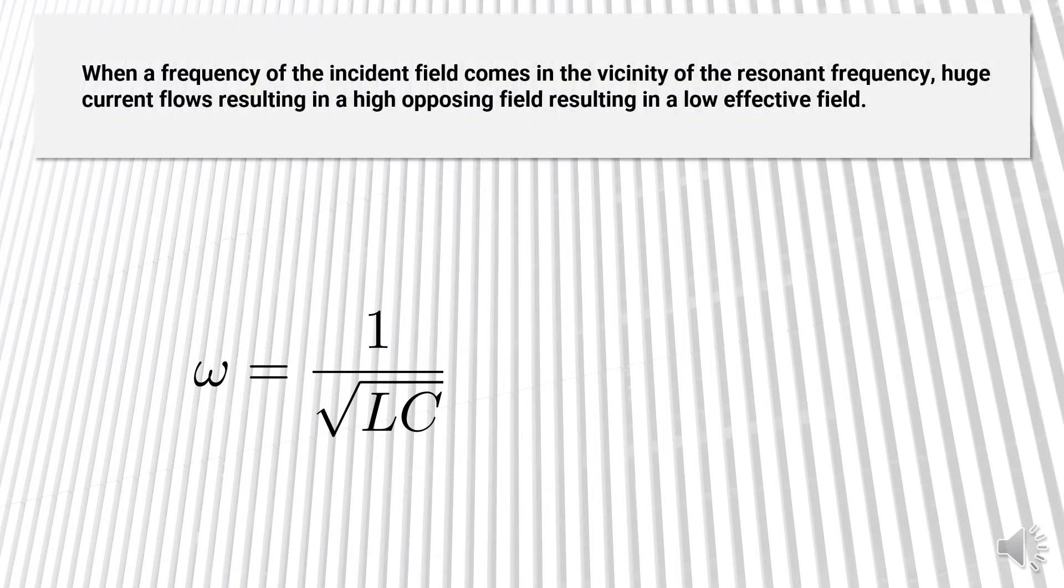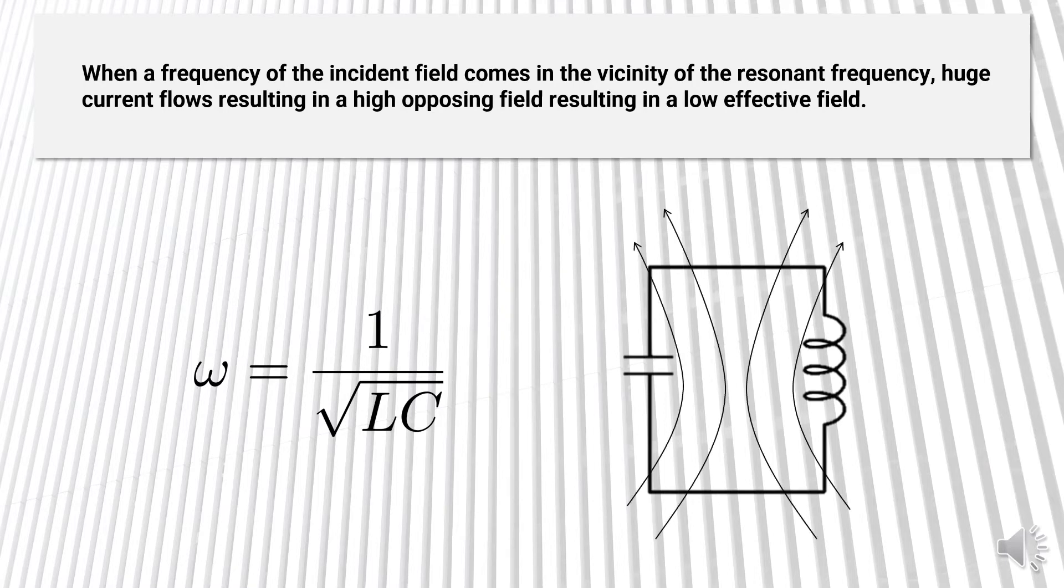Now when the frequency of the incident field comes in the vicinity of the natural frequency, a huge amount of current flows, which results in a high opposing field, which in turn results in a low effective field.